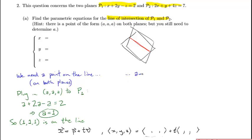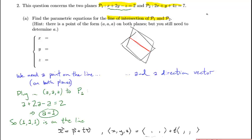We also need a direction vector. Looking at the equations of the planes, the normal vector N1 for the first plane is found by reading off the coefficients of x, y, and z — so N1 is (1, 2, −1). For the second plane, the normal vector N2 has components (2, 1, 4).